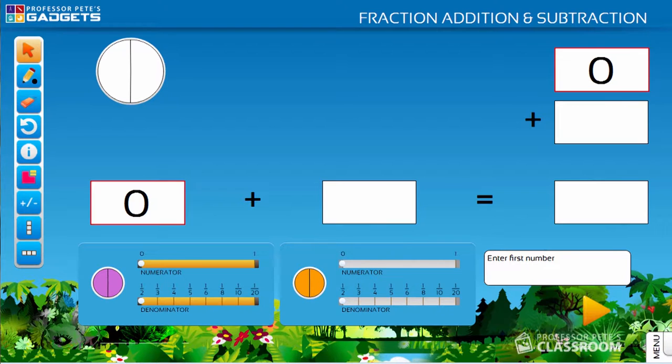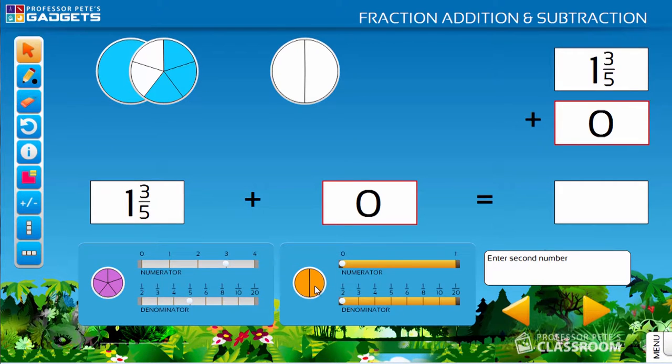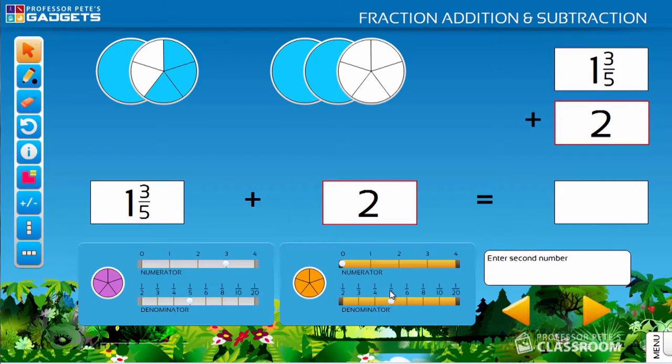Let's work through an easy example. To enter 1 and 3 fifths, choose one whole, then the denominator fifths and the numerator 3. Click on the progress arrow, then enter the second fraction, 2 and 4 fifths.